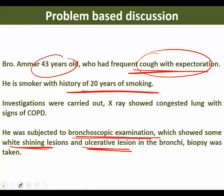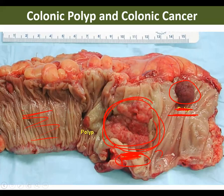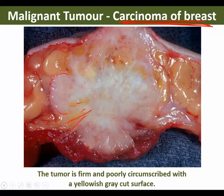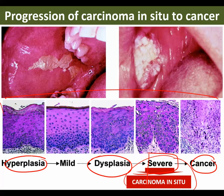Once again: this is rhabdomyosarcoma, this is rhabdomyoma. This is cancer, this is the polyp — you should write colonic cancer. This is a colonic polyp. If I keep this, you should write carcinoma of breast. And this is fibroadenoma. It starts as hyperplasia, then becomes mild, moderate, severe dysplasia — severe dysplasia is called carcinoma in situ — and then they become cancer.